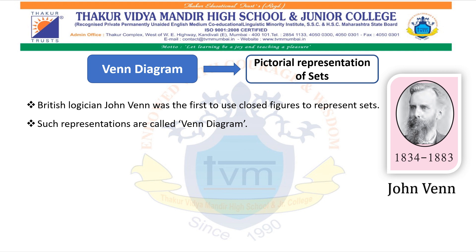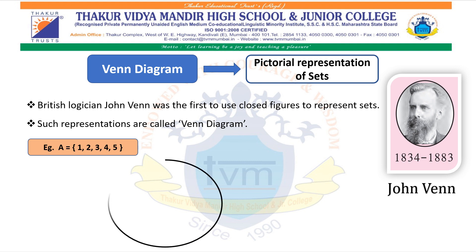Let us try to understand with an example. A is a set of {1, 2, 3, 4, 5}. For representing set A in a pictorial form, we will take one closed figure — here we have taken a circle. In that, we are going to write the name of the set as well as all the elements which set A consists of. This is a pictorial representation of set A, which is called a Venn Diagram.